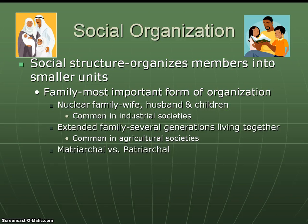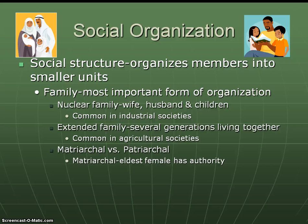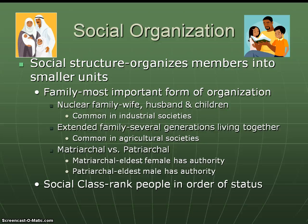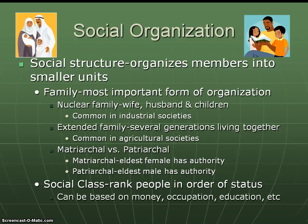There are also different kinds of societies, including matriarchal and patriarchal. Matriarchal societies are where you'll see the eldest female having authority, while patriarchal is where the eldest male has authority. The most common type of society is patriarchal. We also organize people by their social classes — that is, ranking people based on their status, which can depend on money, occupation, education, and so on.